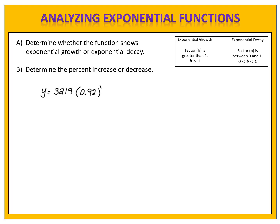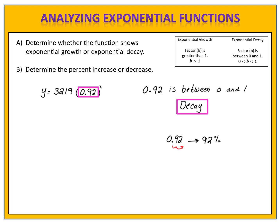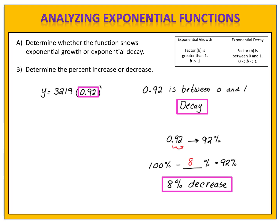Let's compare answers. We look at the factor. The factor is 0.92, which is between 0 and 1. When the factor is between 0 and 1, we have exponential decay. Now we need to determine the percent of decrease. 0.92 is 92%, which is the percent that remains. We started with 100%, we took some percent away, and that left us with 92%. What amount was subtracted from 100% to leave us with 92%? 8%. So we have an 8% decrease. This function is an exponential decay function with an 8% decrease.